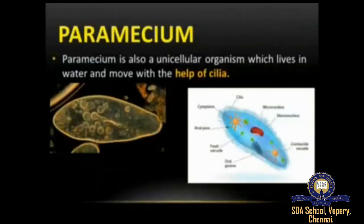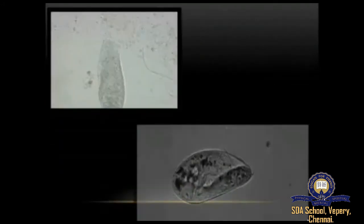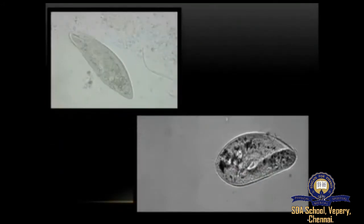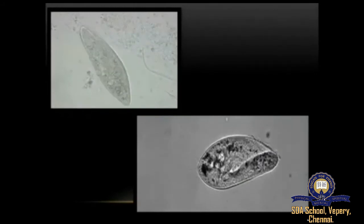Cilia are present all over the body of paramecium and help it move from one place to another. Paramecium is a unicellular organism that lives in water and moves with the help of cilia. From the GIFs you can see that with the help of cilia, paramecium is able to move from one place to another.